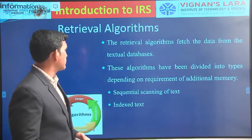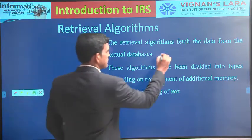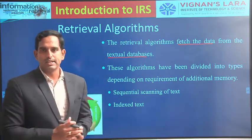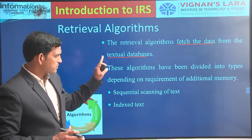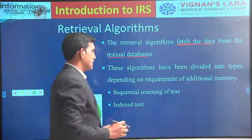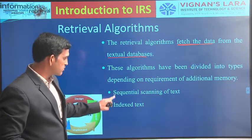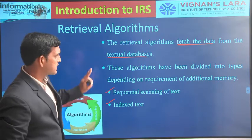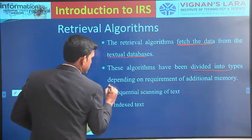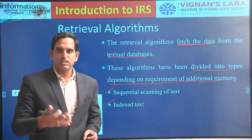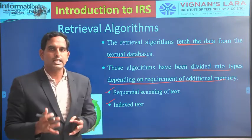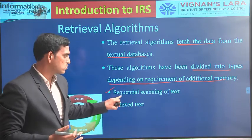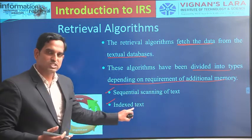The first one is retrieval algorithms. Retrieval algorithms basically fetch the data from your textual databases. For the time being we will be considering only textual databases, though similar concepts apply to other types as well. These retrieval algorithms are divided into two types depending upon the requirement of additional memory: one is sequential scanning of text, and the second is indexing text.